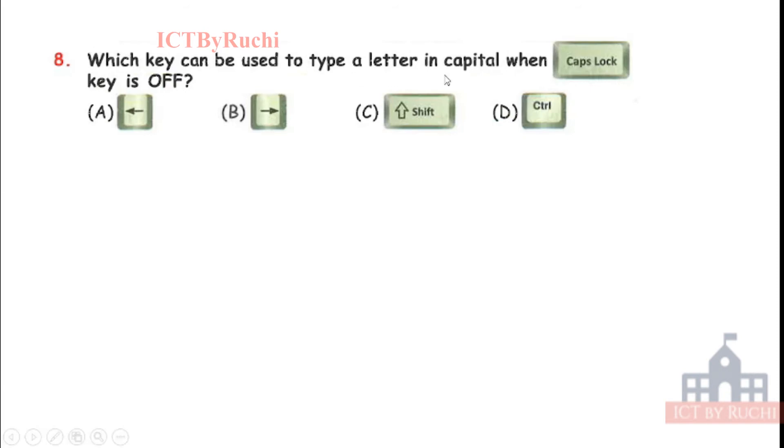Which key can be used to type a letter in capital when caps lock key is off? Our caps lock key is off but we have second key which can be used to type a letter in capital. A, right arrow. B, left arrow. C, shift or D, control. Tell me the answer. Answer is C, shift. Shift key is used in combination with number key to type symbol printed on them. It is also used to type in capital letter when caps lock is off and to type in lowercase letter when caps lock is on.